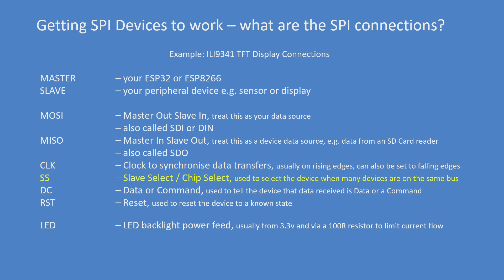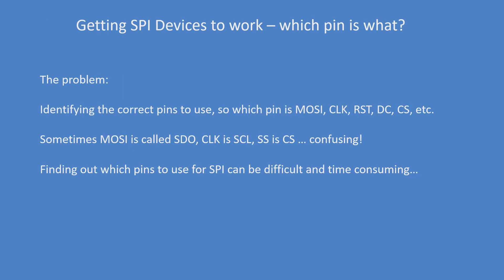There are four different modes. Slave Select is often called Chip Select. Data Command — for instance, if that pin is high it's data, and if it's low it's a command. Reset is used to reset the device to a known state, and this device also has an LED pin which you can typically feed through 3.3 volts.